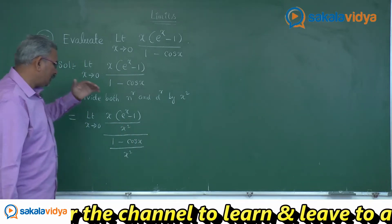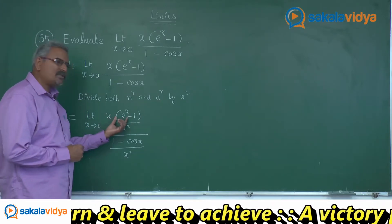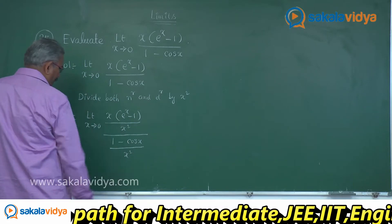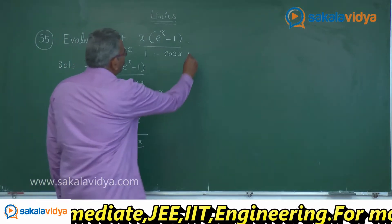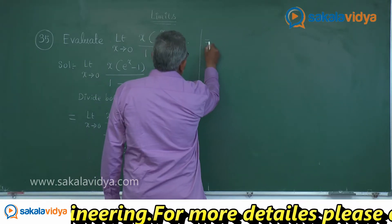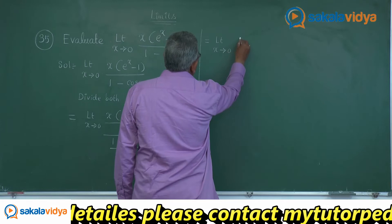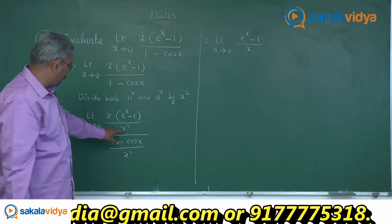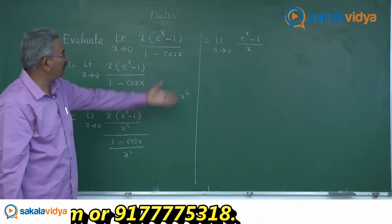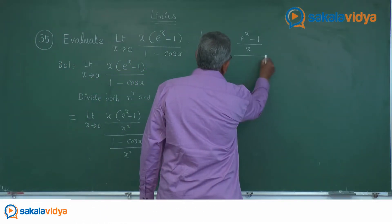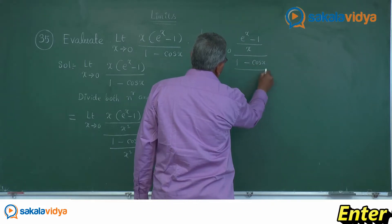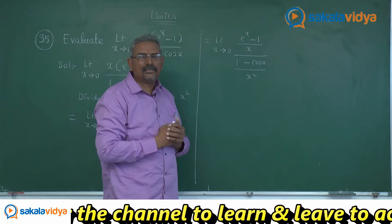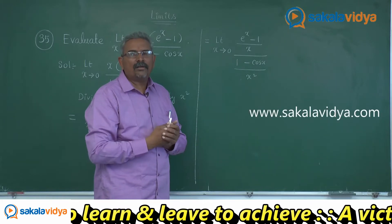Now in the numerator we can simplify it. x times e power x minus 1, divided by x square: the x cancels, giving e power x minus 1 by x. So this can be written as: limit x tends to 0, e power x minus 1 by x, divided by 1 minus cos x by x square. In the numerator we have one function, in the denominator another — this is a rational fraction.